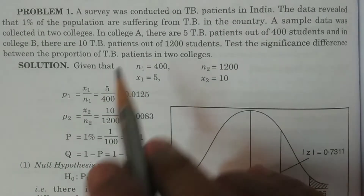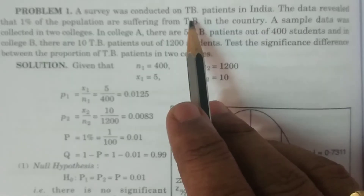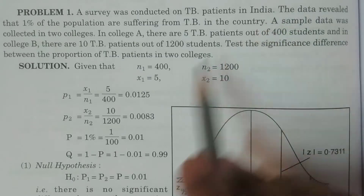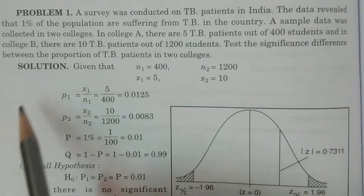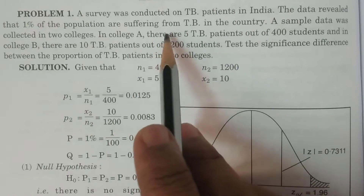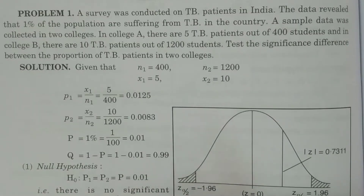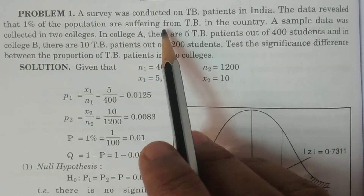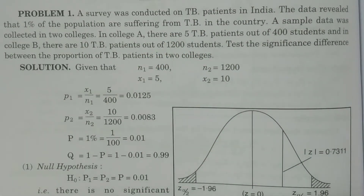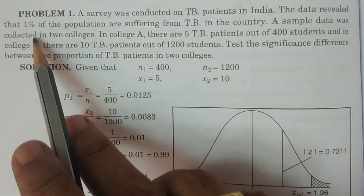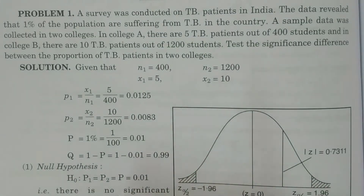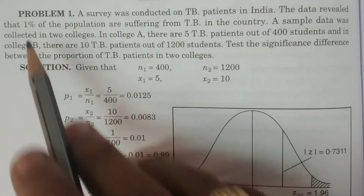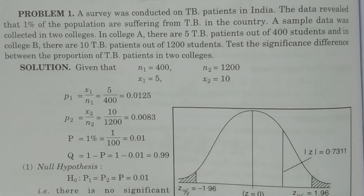See problem number one. A survey was conducted on TB patients in India. The data revealed that 1% of the population are suffering from TB in the country. This means capital P is given — 1% of any kind of population. So capital P1 is equal to capital P2 is equal to capital P, which is 1%.